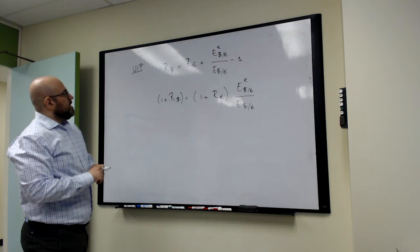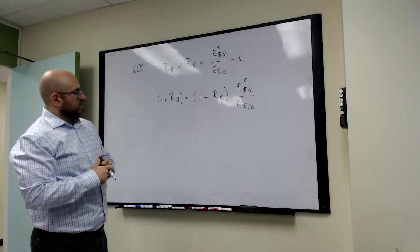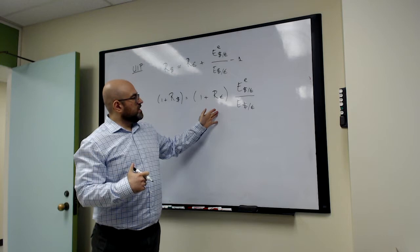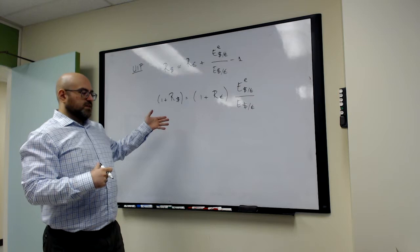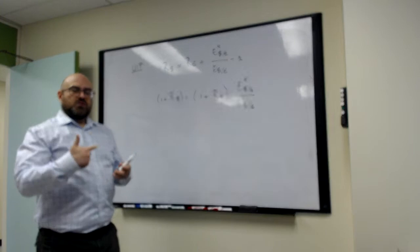So the idea is the following. If UIP does not hold, either because the left hand side is greater or the right hand side is greater, we should be able to take a loan in the country with the low return and make a deposit in the country with a high return and in one year's time pocket the difference.